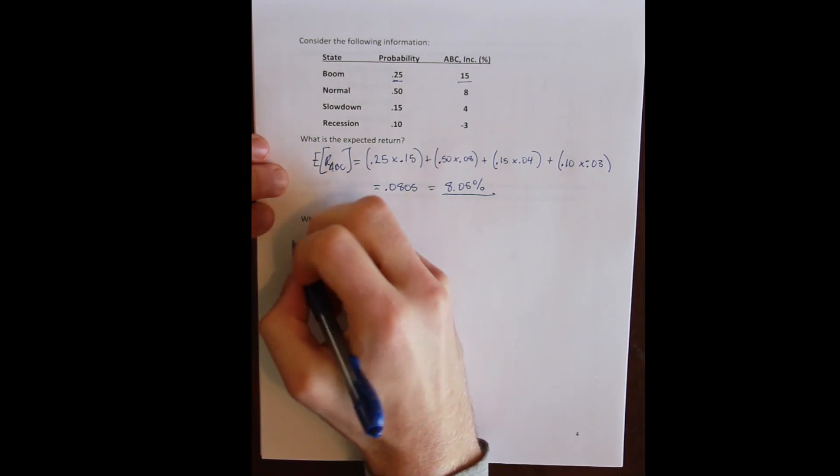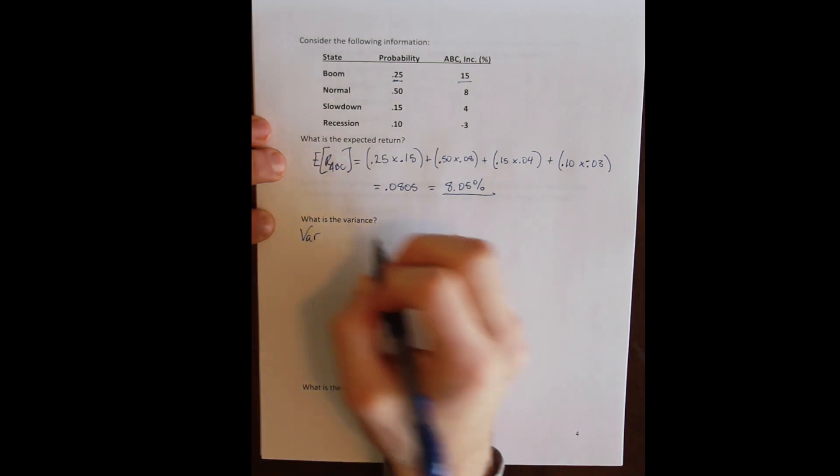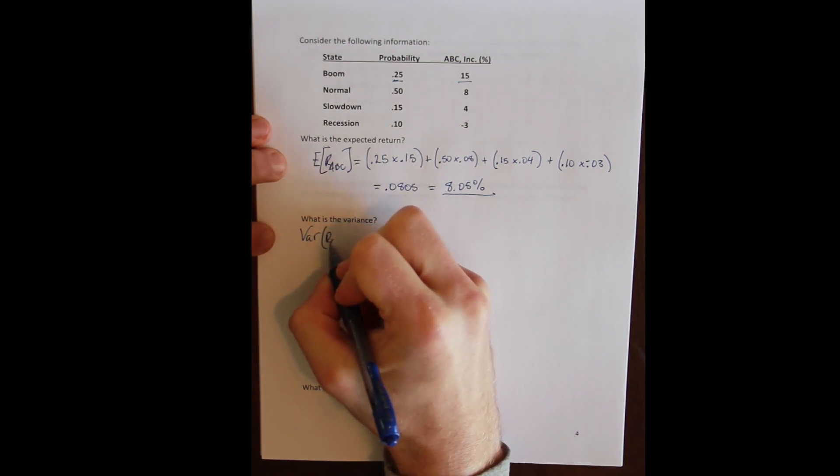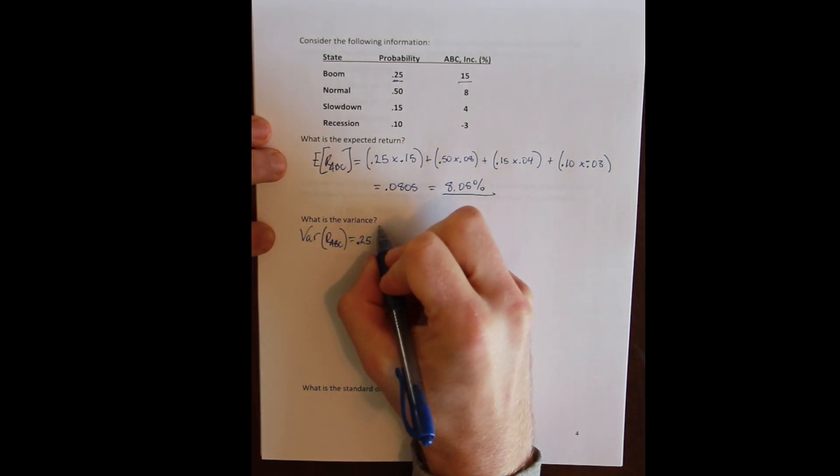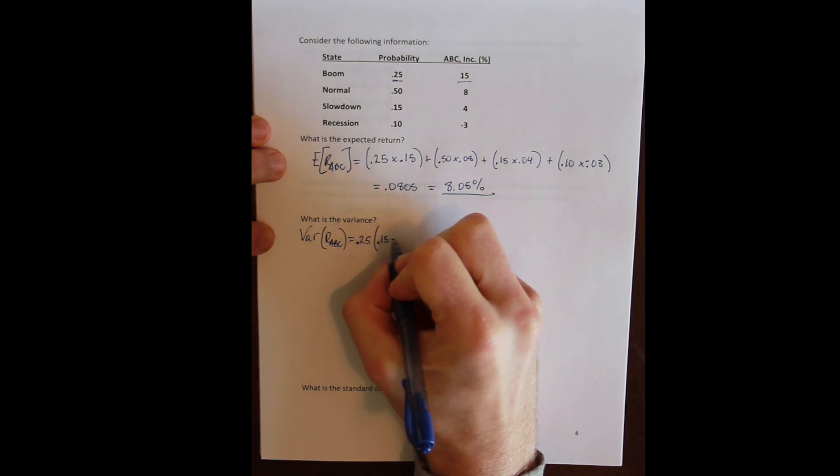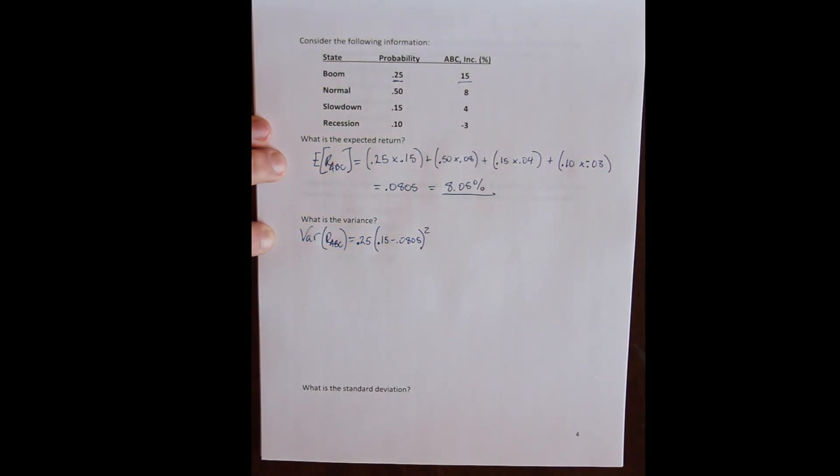The variance is the probability weighted difference between the actual return and the expected returns. So the variance of ABC, the variance of the return of ABC, is the probability of each state. There's a 25 percent probability of a boom times the difference between the actual return in that state and the expected return of ABC squared.